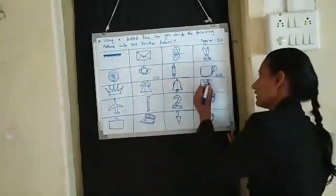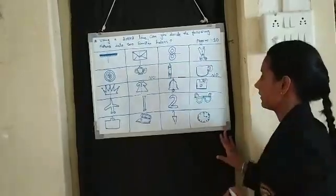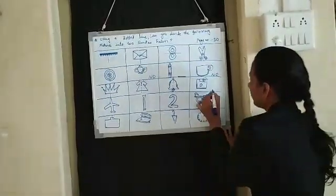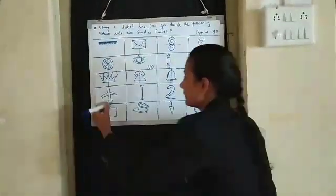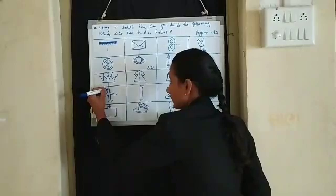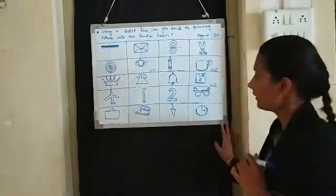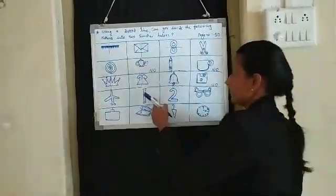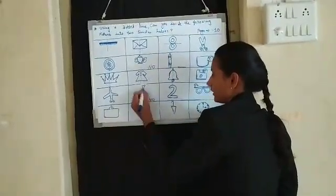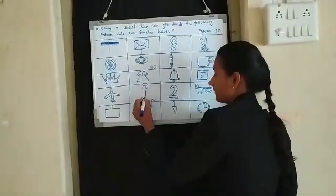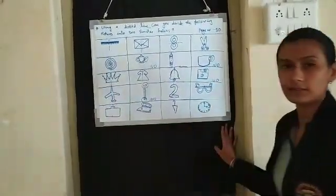Because here this side is there, here is not there. So, here write no. Then, this one — yes, we can divide. Then, this we cannot divide because here, upside is different and downside also different.